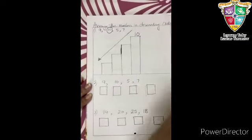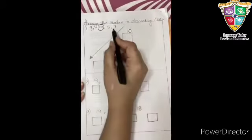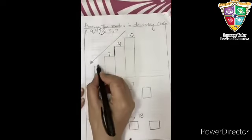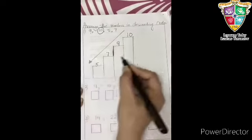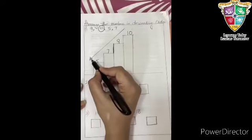Then the next number is 9. On the next stair, we are going to write 9. Then 7. And the last one is 5. See, now we have arranged the number in decreasing order or descending order.